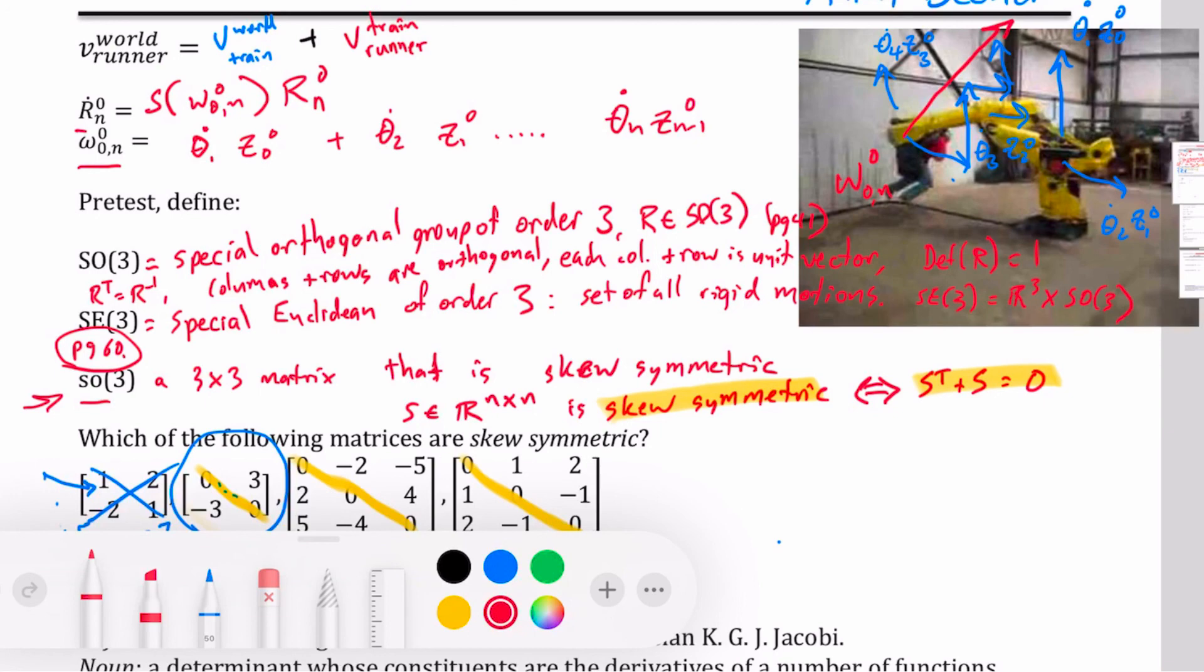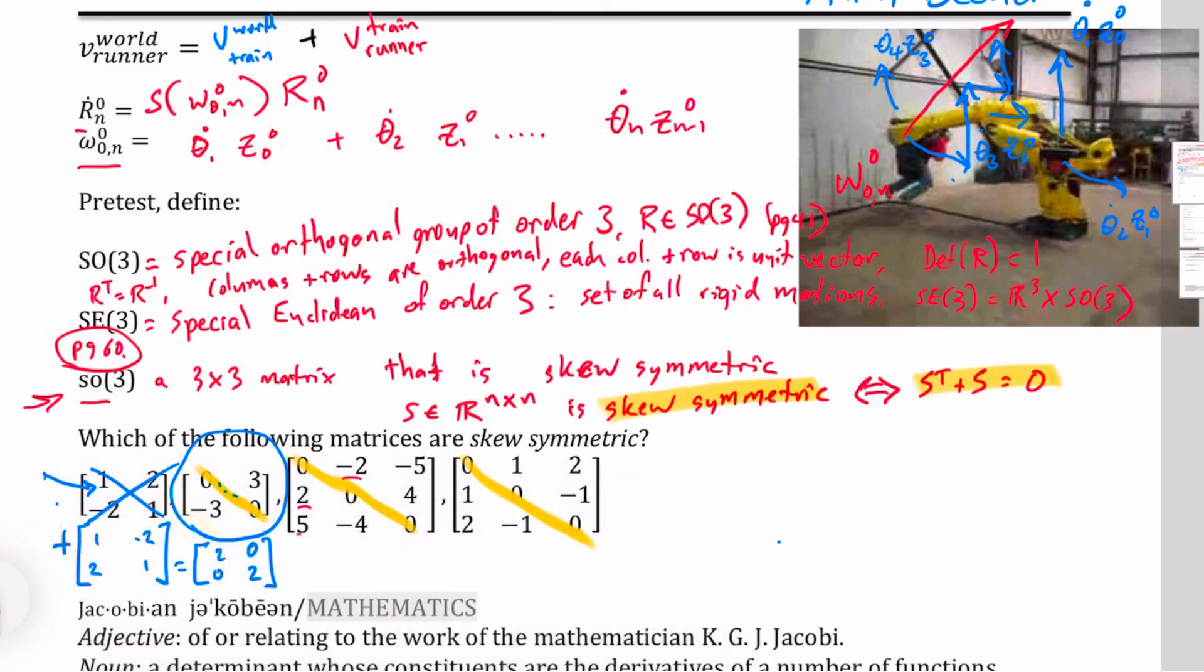This next one we have here, you can see that 2 is canceled by negative 2, 5 by negative 5, and negative 4 by 4. So this one is also skew-symmetric. If we start here, we look at these two. They're not opposite signs. Neither of these. This is definitely not skew-symmetric. So we've got two that were and two that are not.